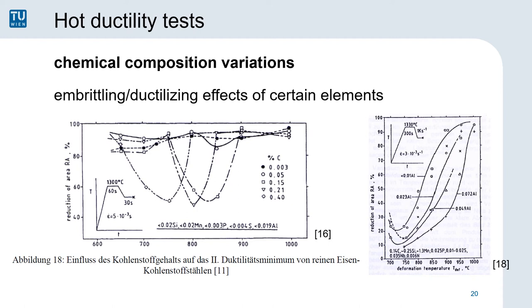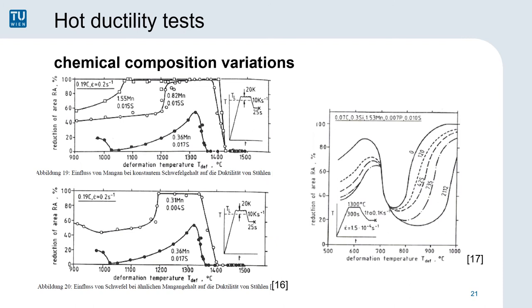A lot of elements are known to influence the hot ductility of steels. One easy example is carbon, as it influences the phase change temperature from austenite to ferrite, which in turn influences the temperature at which ferrite films form at the grain boundaries, which can weaken the grain boundary interface and lead to brittle failure. The right diagram shows changes in the aluminum content. An increase in aluminum can form more aluminum nitrides, which in turn decrease the strength of the grain boundaries and lead to earlier failures, even at higher temperatures.